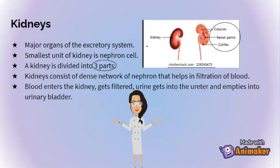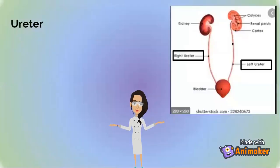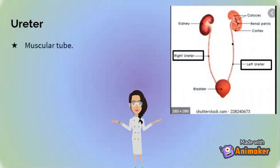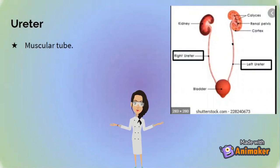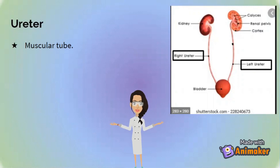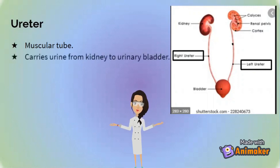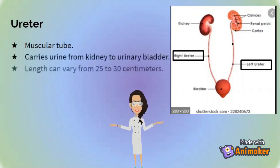Blood enters the kidney, gets filtered, and urine gets to the ureter and empties into the urinary bladder. Now let's learn about the ureter. The ureter is a muscular tube and it carries urine from the kidney to the urinary bladder. Its length can vary from 25 to 30 centimeters.